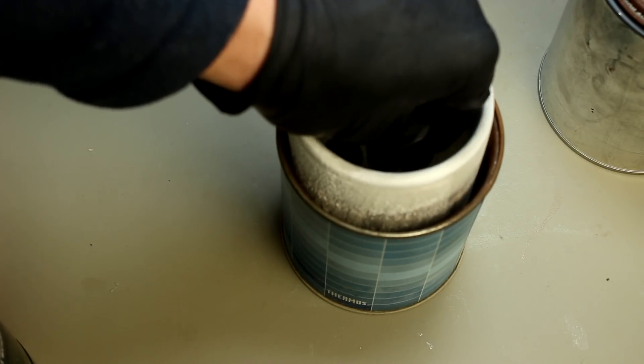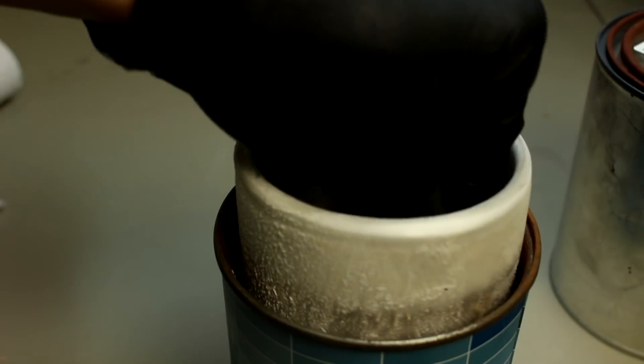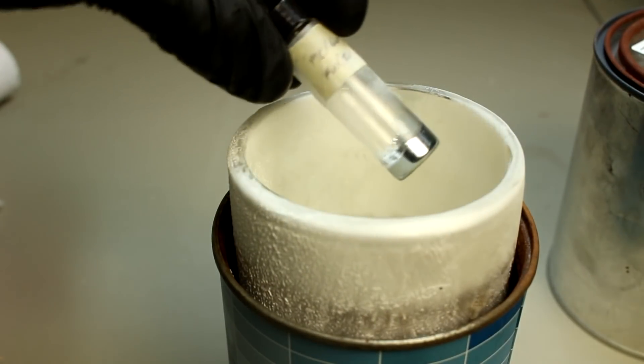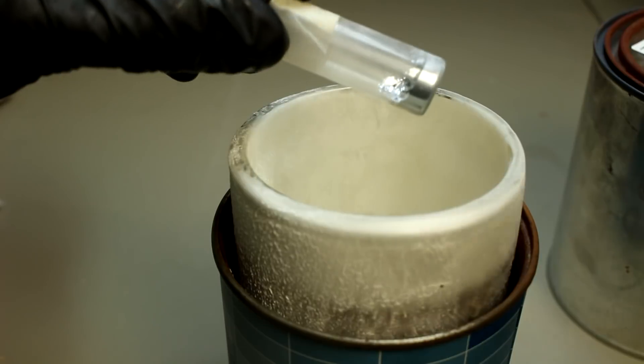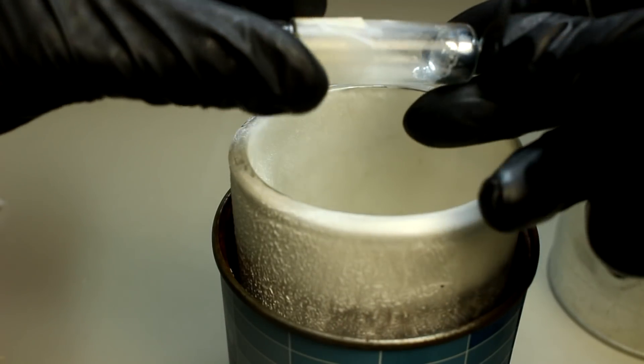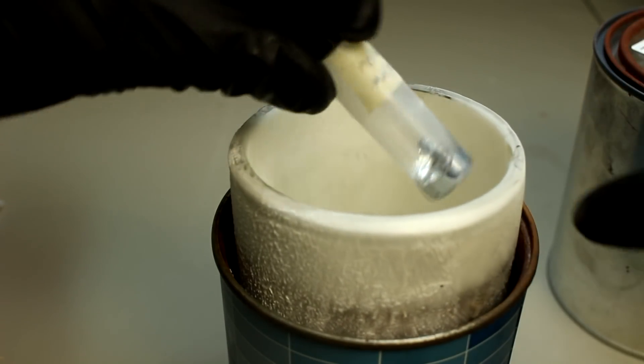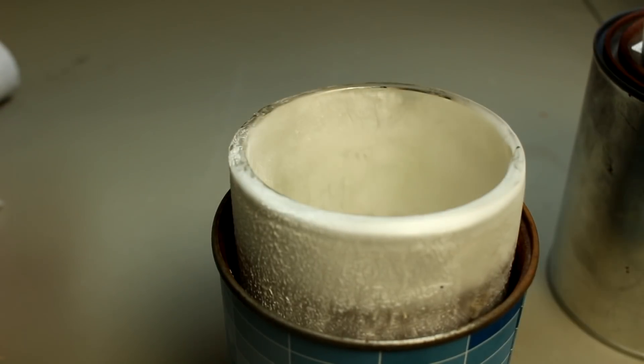Hopefully the jars don't break. Alright, it's been in there for a couple of minutes now. Pull the mercury out, and as you can see, the mercury is frozen solid. There you go. Set that aside for a minute.